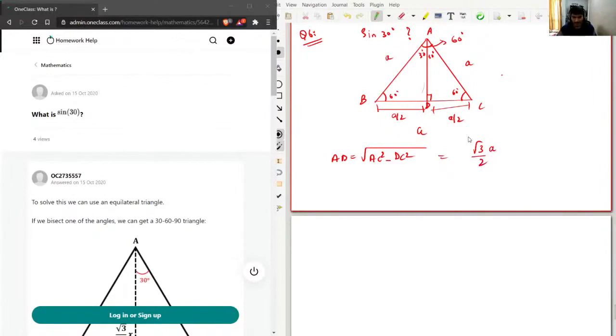But the thing is that we won't be needing this length because for sine we need the opposite length and the hypotenuse, which both of which we have. So sine theta is opposite over hypotenuse. In our case, sine 30 will be opposite is DC over hypotenuse is AC. Now DC is a over 2 and AC is a. This and this will get cancelled and I can write sine 30 as 1 over 2, which is the correct value of sine 30.